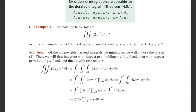Of the 6 possible iterated integrals, we will choose the one in equation number 2. We will first integrate with respect to z, holding x and y fixed, then with respect to y holding x fixed, and finally integrate with respect to x. So the order is: z varying from 0 to 2, y varying from 0 to 3, x varying from −1 to 2, integrating the function 12xy²z³.